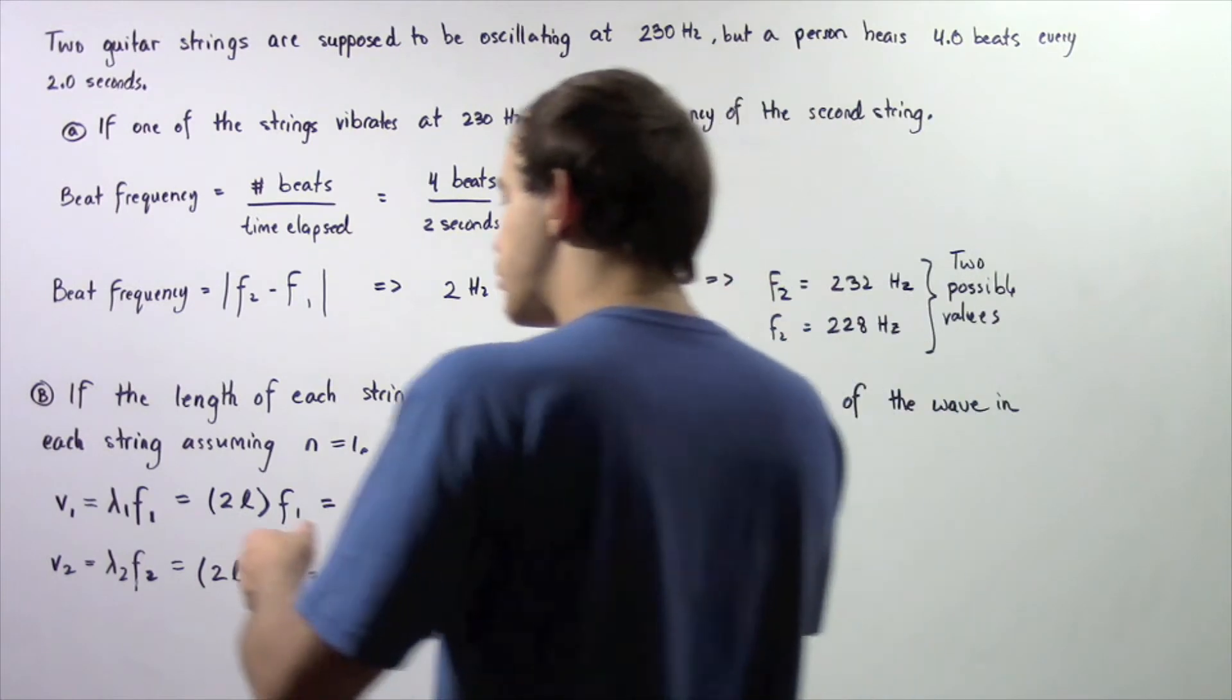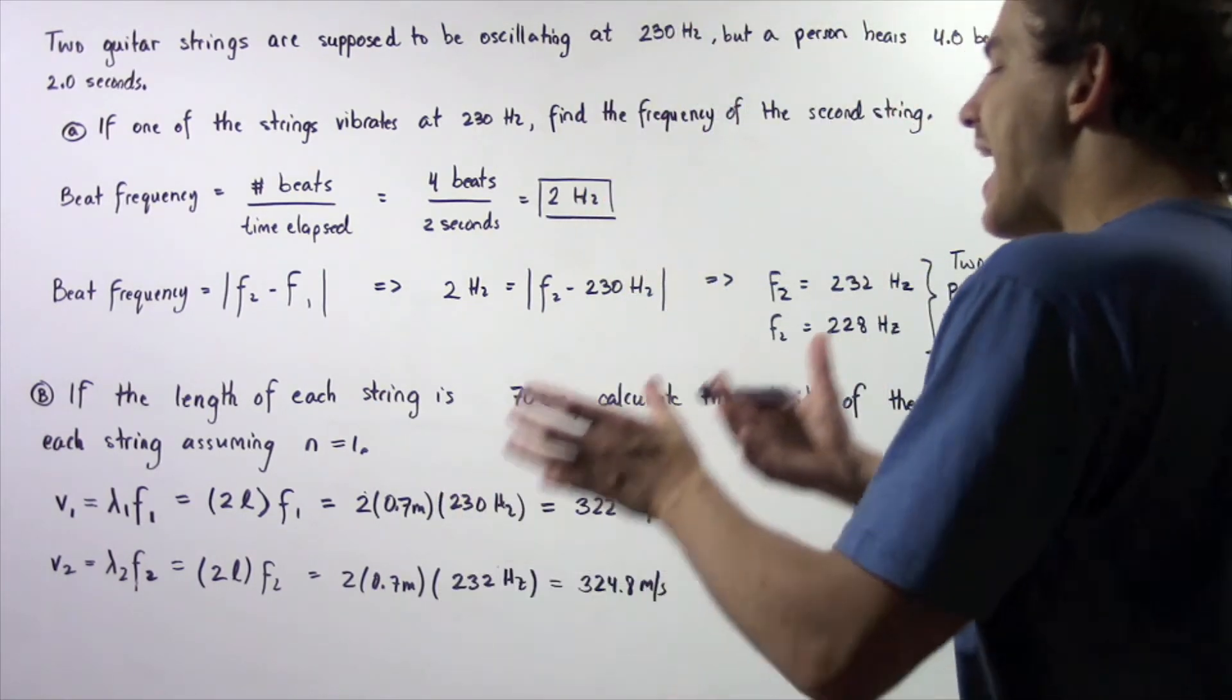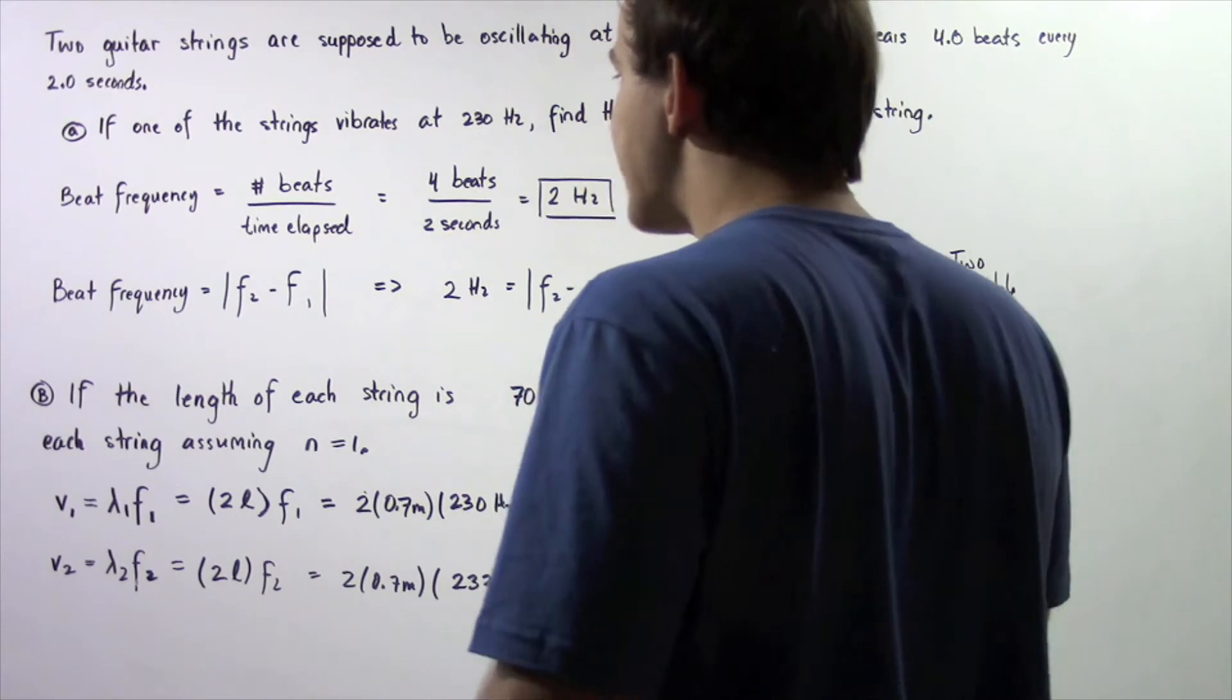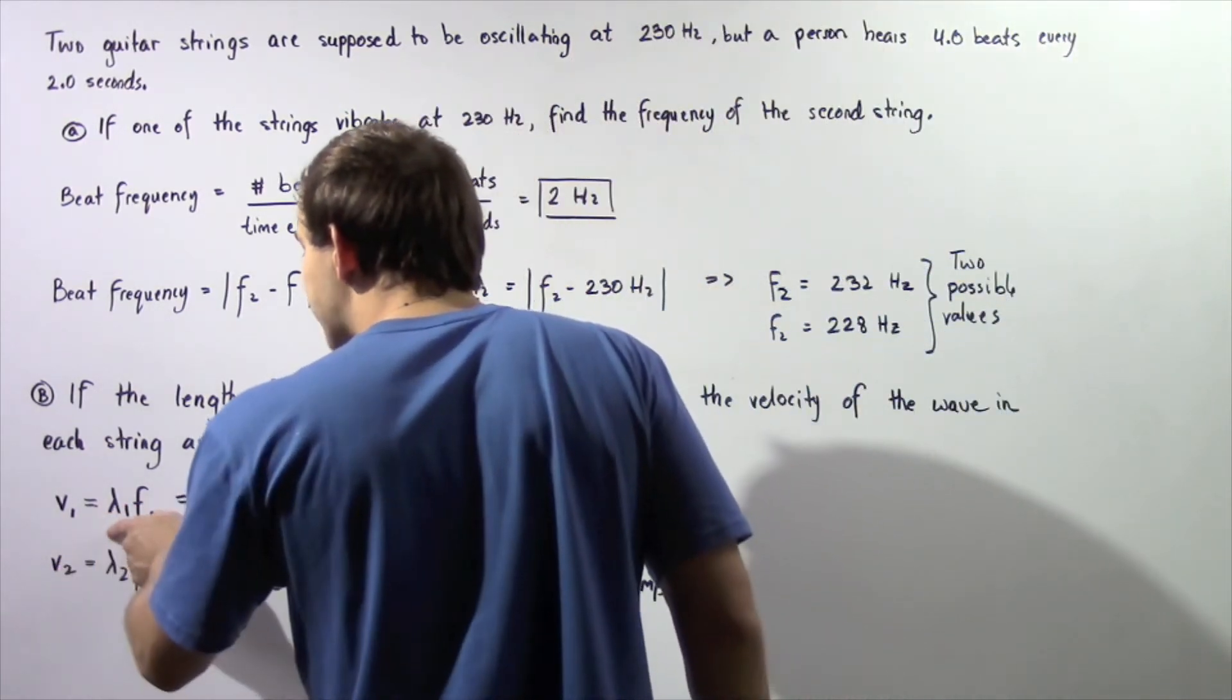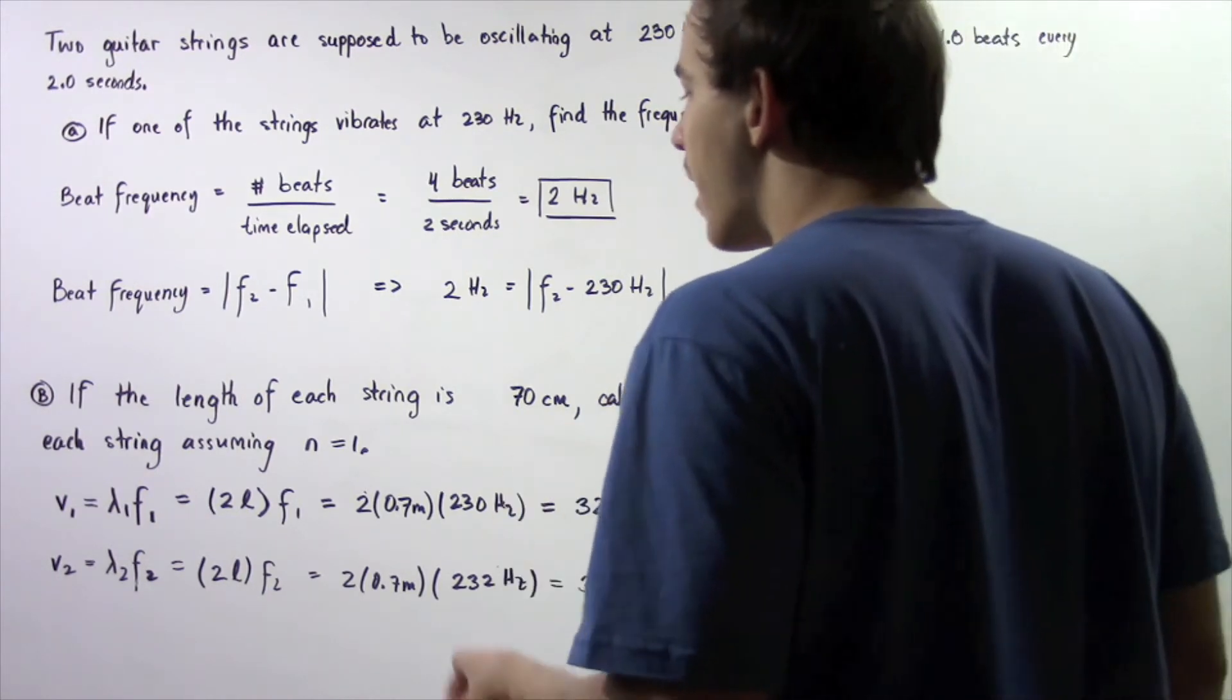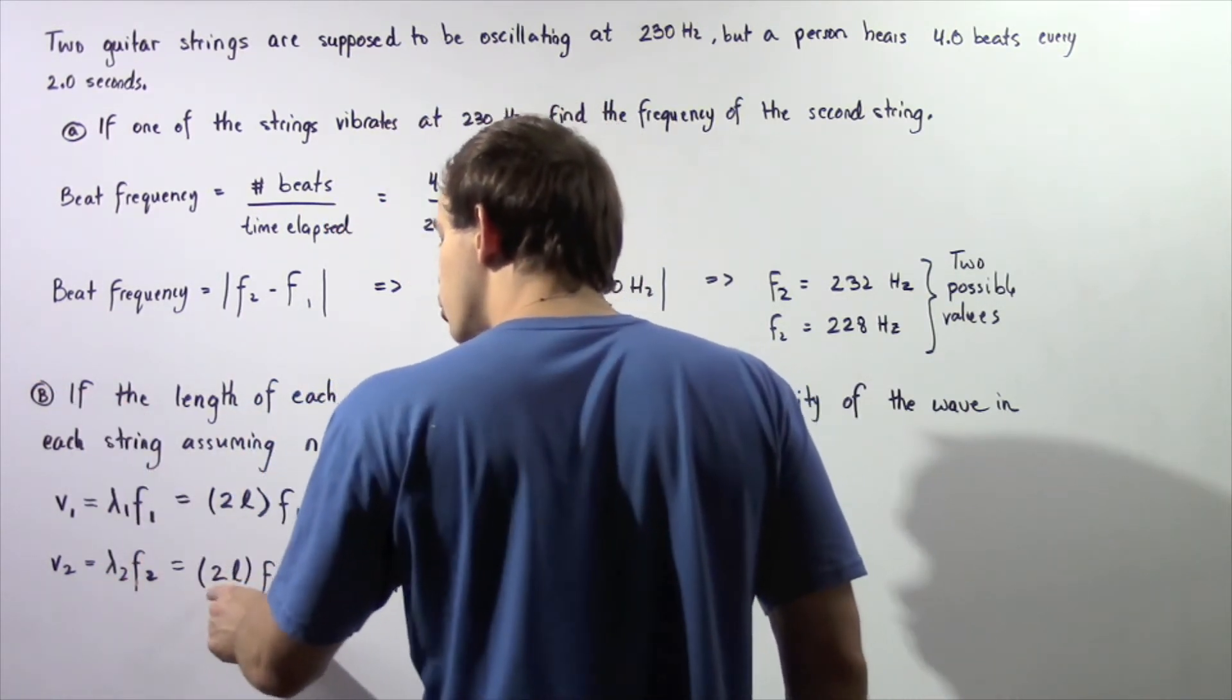We want to use this equation: the velocity of our standing wave is equal to the product of lambda and the frequency, where lambda is the wavelength and the frequency is the number of cycles every second. Recall that lambda is equal to 2 multiplied by the length of that string divided by n. Since n equals 1, lambda 1 is simply 2L and lambda 2 is also 2L.